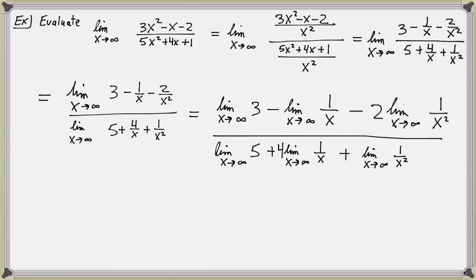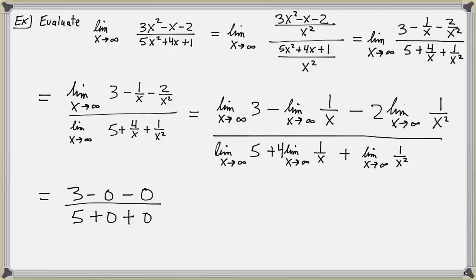Recall that the limit of 1 over a power of x will always approach 0. So the numerator simplifies to 3 minus 0 minus 0, and the denominator simplifies to 5 plus 0 plus 0. So the final limit is 3 over 5.